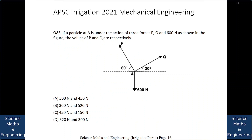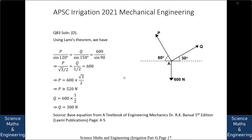A particle at A is under the action of three forces P, Q, and 600 N as shown in the figure. The values of P and Q are respectively: A. 500 N and 450 N, B. 300 N and 520 N, C. 450 N and 150 N, or D. 520 N and 300 N. Using Lamy's theorem: P/sin120° = Q/sin150° = 600/sin90°, which gives P = 520 N and Q = 300 N. The answer is D.